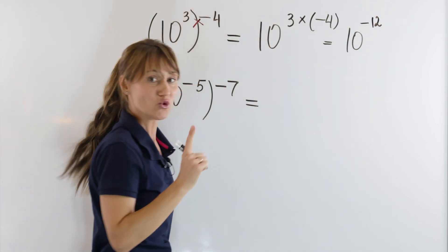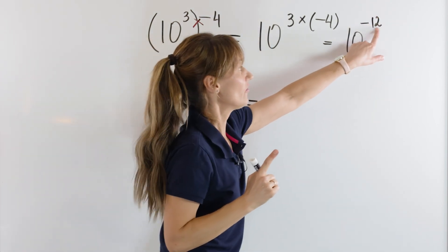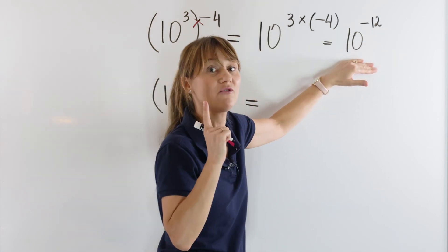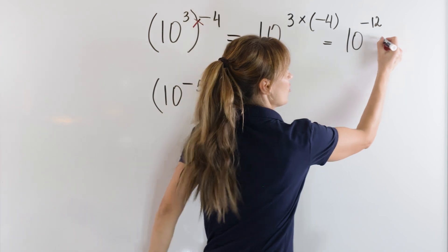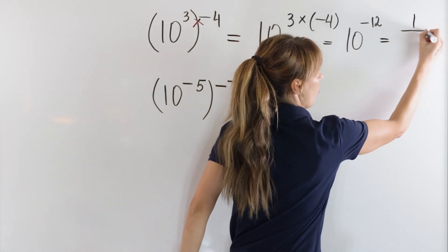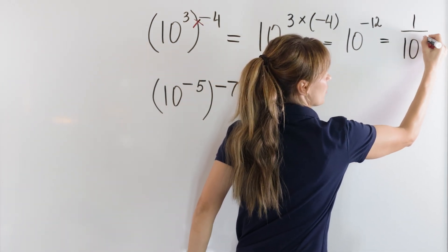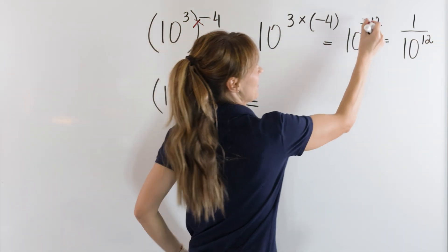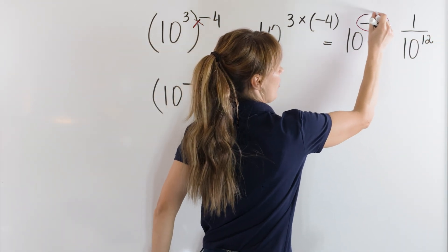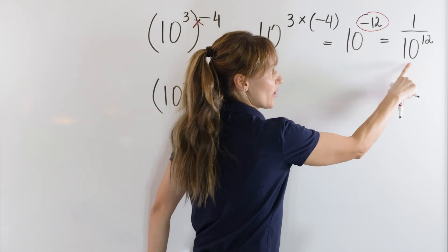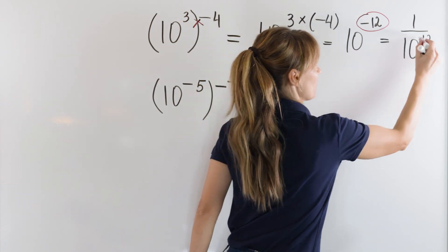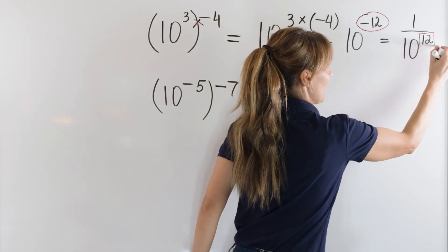Now, do not stop to get rid of the negative exponent and have a positive exponent. Change this expression to a fraction, like this. You will write 1 over 10 to the power of positive 12. You see, we had a negative exponent. We rewrote this expression as a fraction with a positive exponent, like this. Very good.